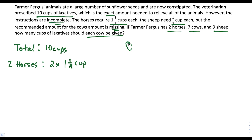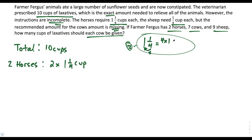To do this, it helps to convert the mixed number into an improper fraction. So for 1 1/4: you multiply 4 times 1, and then add the result to the numerator. We have a 1 in the numerator, so it's plus 1, and the denominator stays 4. So 4 times 1 is 4, plus 1 is 5. If we rewrite this as an improper fraction, that would be 5/4.